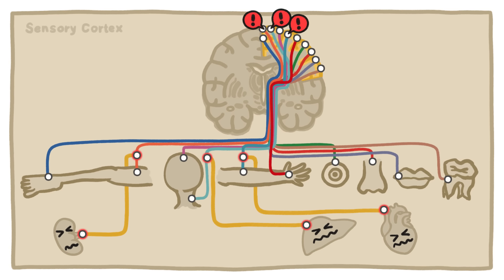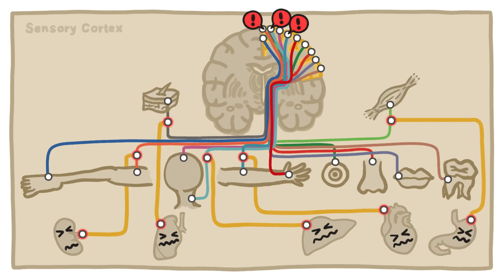But much of the time, pain from organs is just felt in nearby skin and muscles due to the way that nerve paths merge. This phenomenon is called referred pain, and it seems to be an unavoidable quirk of the way that nerves are wired.